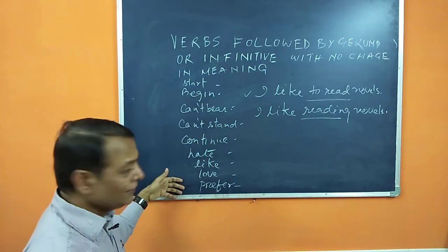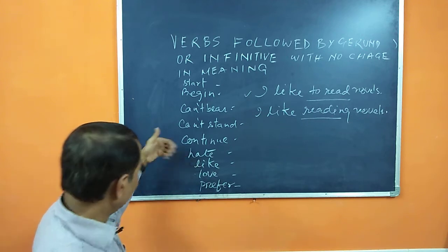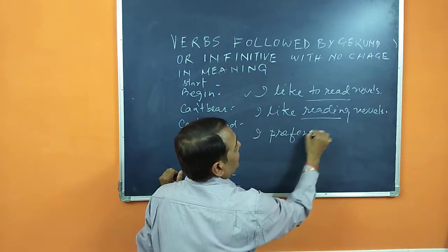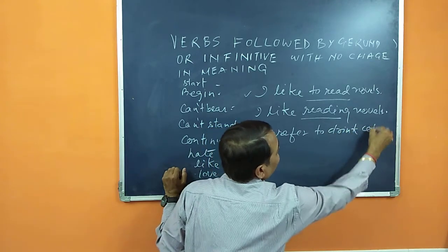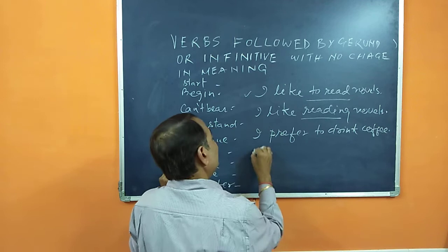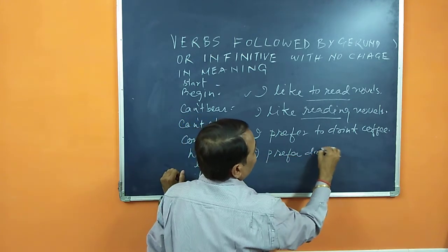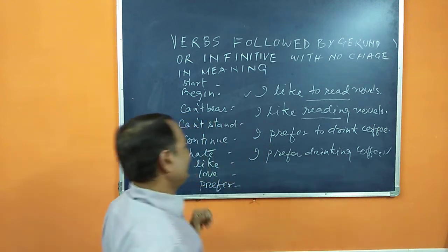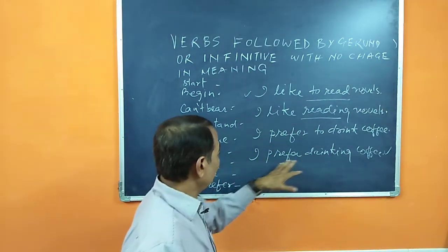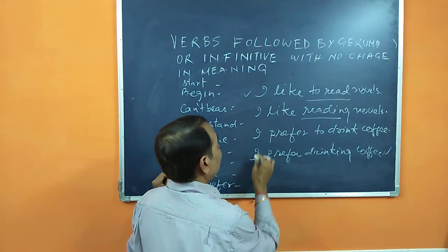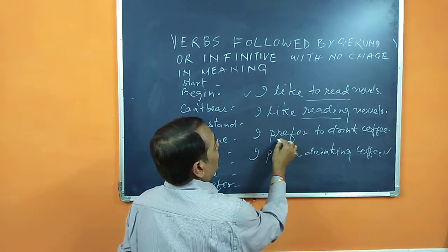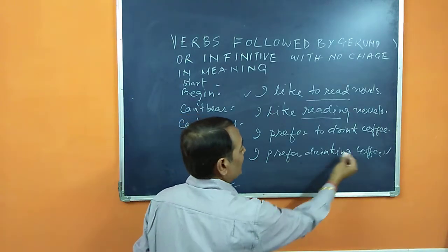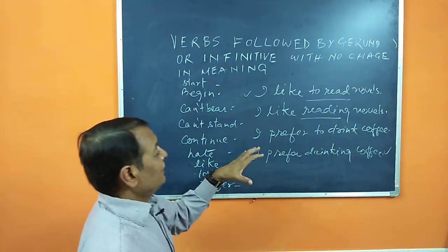Let's take another example: 'prefer.' If I say 'I prefer to drink coffee' or 'I prefer drinking coffee,' grammatically both are correct. Maybe people prefer using the gerund form because you use fewer words. 'I prefer to drink coffee' is five words, while 'I prefer drinking coffee' is four words.